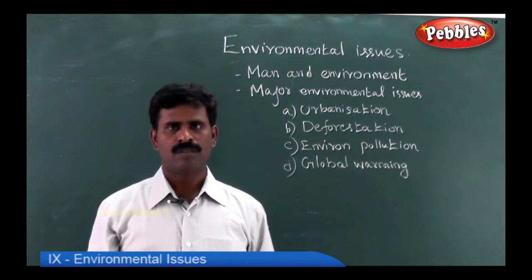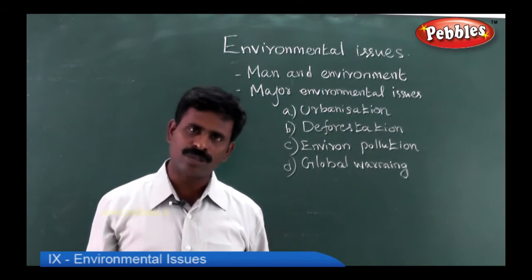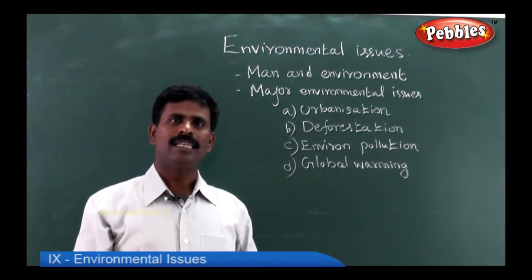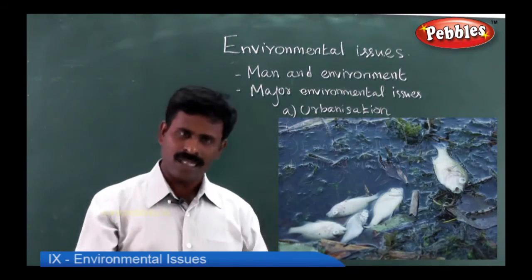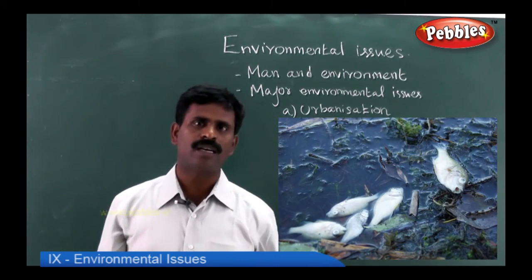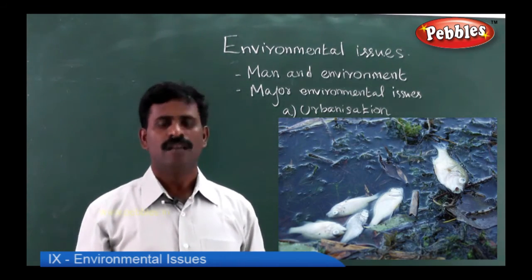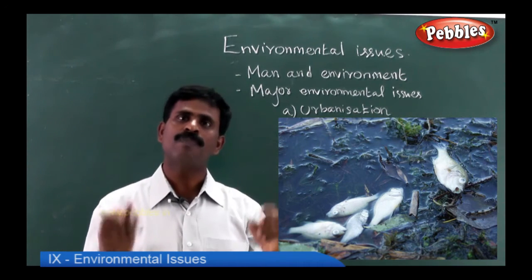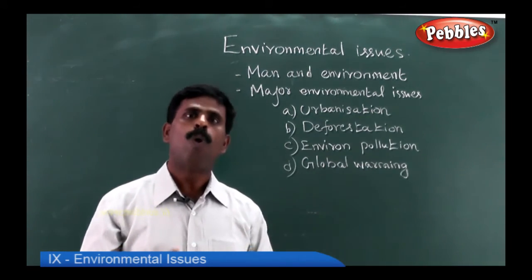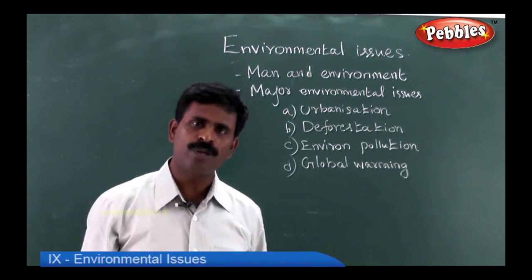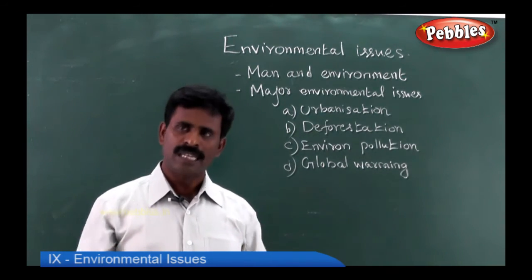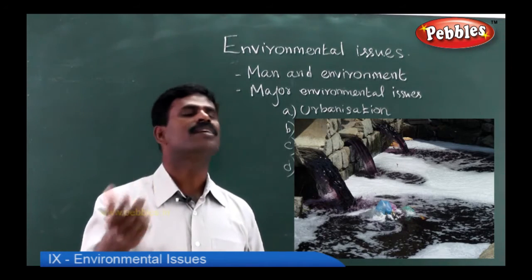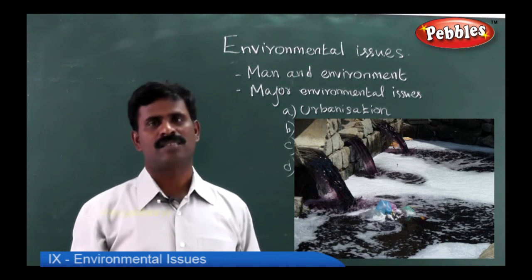Water pollution: what is water pollution? It is the releasing of waste into the water, which becomes polluted. Rivers are polluted, water bodies are polluted, and drinking water is polluted. Hence, a serious health hazard is created.